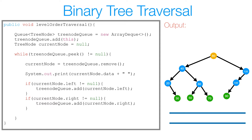A really good question to ask is: why are we using a queue and not a stack? I challenge you to replace our queue with a stack and see what happens. You may notice that instead of approaching level by level, you're actually going deeper down the tree — and that's why a stack is a useful data structure for implementing depth-first search.